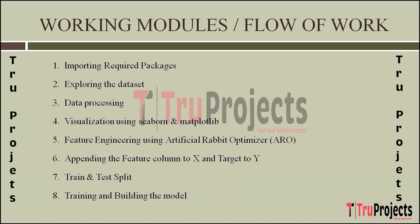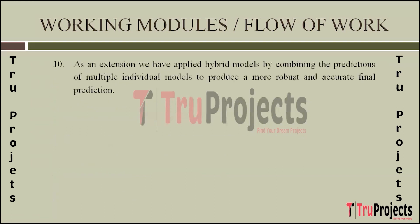The next step is training and building the model. Machine learning algorithms including Decision Tree, Support Vector Machines, and ensemble methods are applied to train models for heart disease prediction. The most accurate model is selected based on evaluation metrics. As an extension, hybrid models are introduced by combining predictions from various individual models, creating more robust and accurate final predictions, elevating the overall performance of the system.